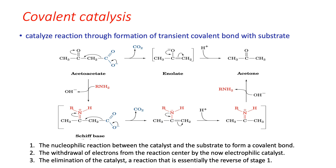Once the Schiff base is formed, the nucleophile becomes an electrophile and attracts electrons towards it, leading to release of carbon dioxide. It then undergoes electronic rearrangement, and in the third stage the primary amine is released from the system — just a reversal of the first stage of the reaction.